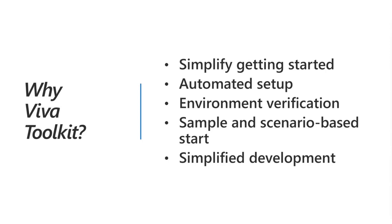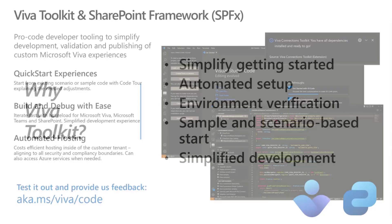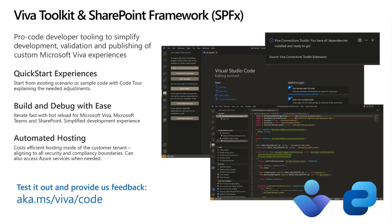If you're already familiar with SharePoint Framework, this Visual Studio Code extension is completely optional. It overlays automation from the Yeoman Generator and CLI for Microsoft 365. All features and capabilities within the Viva Toolkit are already available in GA either from CLI for Microsoft 365 or from the SharePoint Framework Yeoman Generator. What it does is remove the need to remember command line commands — if you prefer the command line, you can keep doing that.